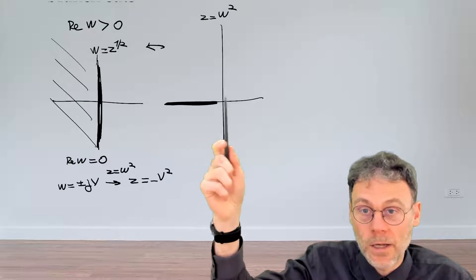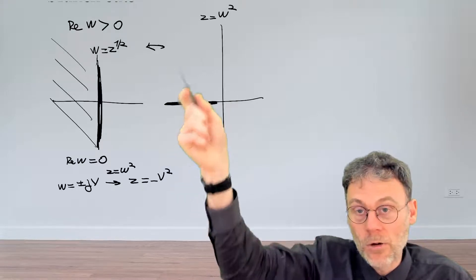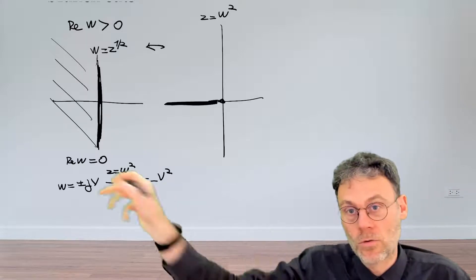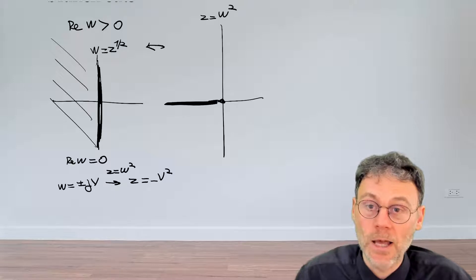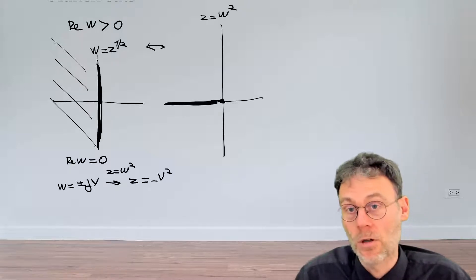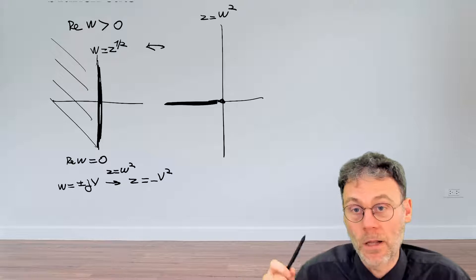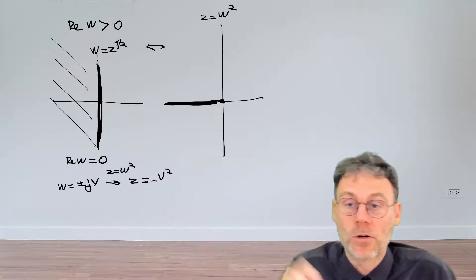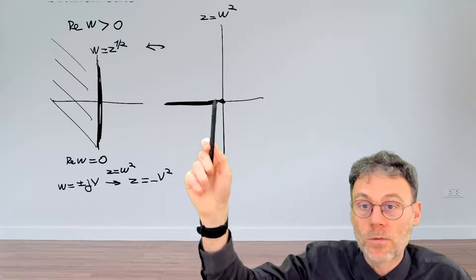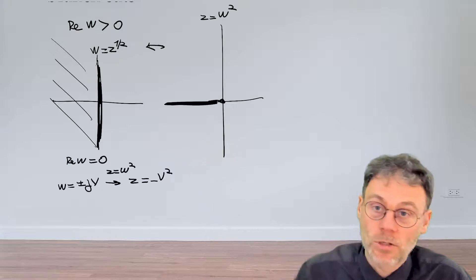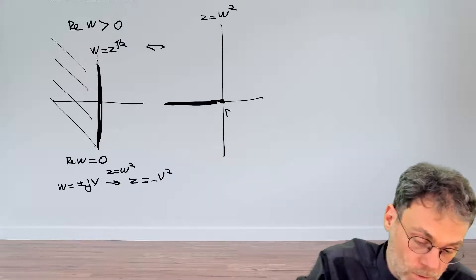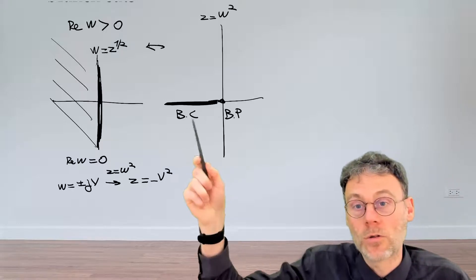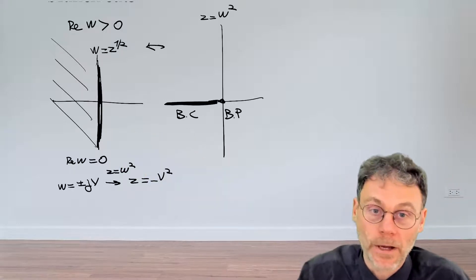This line in the input domain — in the z-plane — which starts at the origin and runs to minus infinity along the negative real axis, is called the branch cut of the square root. The branch cut comes from the fact that we decide to throw away part of our solution space. The branch cut originates at a certain point called the branch point. So this is the branch point, this is the branch cut, and if you want, you could also say there is a second branch point at minus infinity.